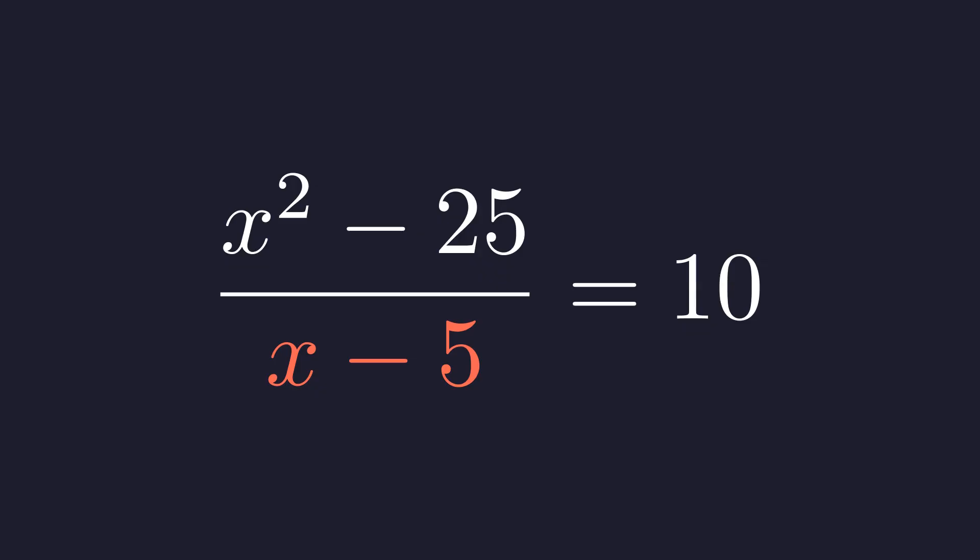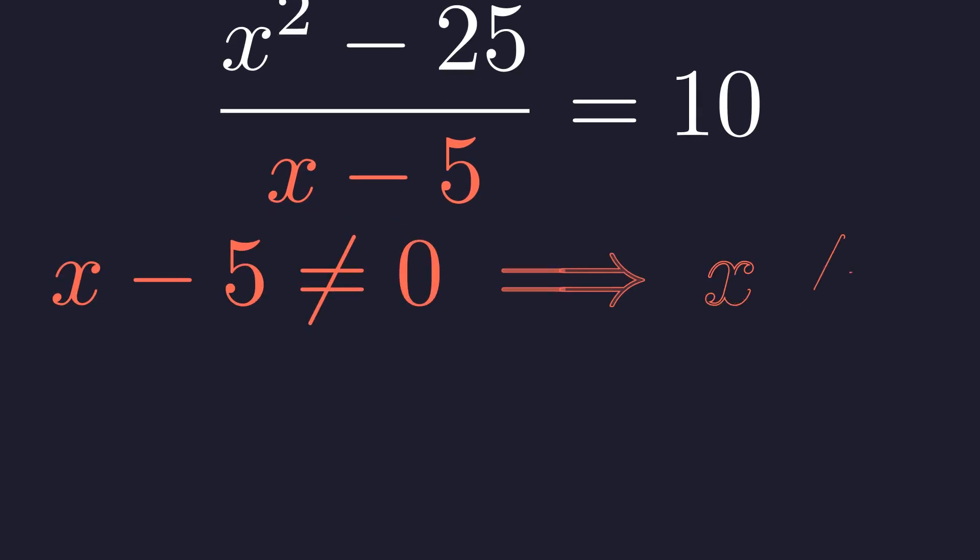Looking at our denominator, x minus 5, for this fraction to be well-defined, this expression can't equal zero, which gives us a crucial restriction. So x cannot equal 5. That's our forbidden value. Whatever answer we get from our algebra, it better not be 5. Remember this restriction, it's going to be important.